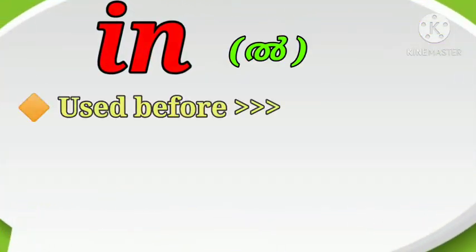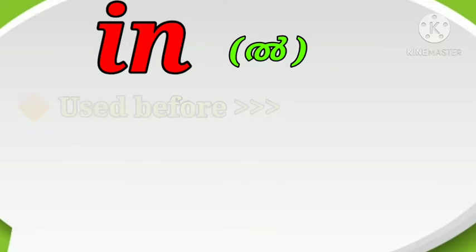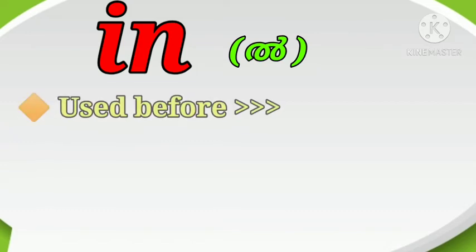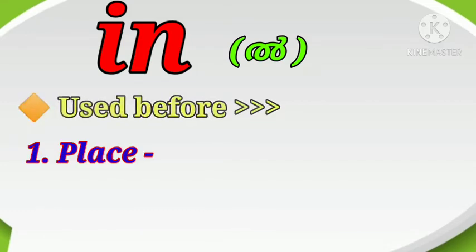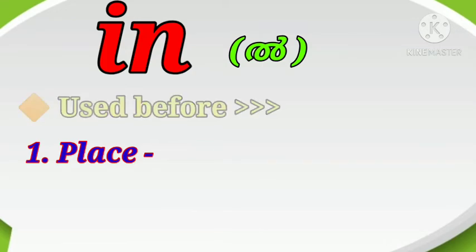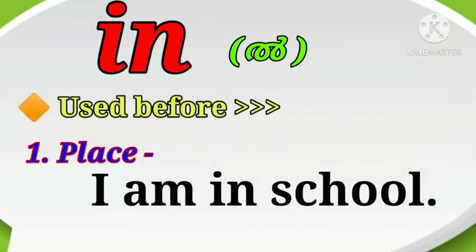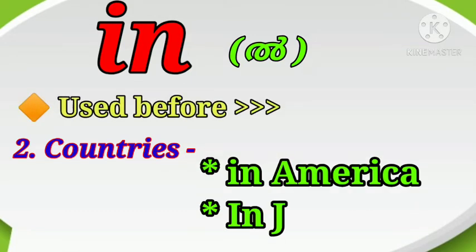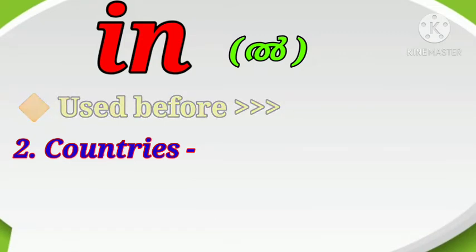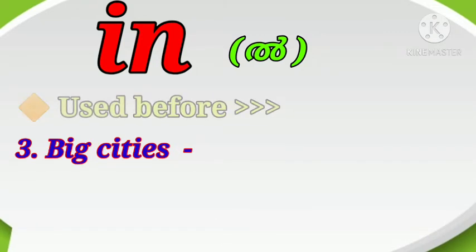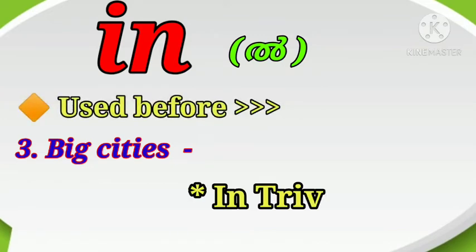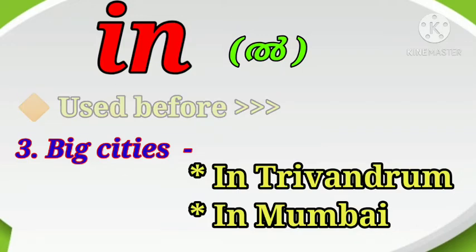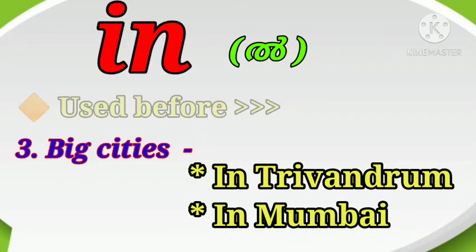The preposition 'in' is commonly used before any places, countries, big cities, months, years, and seasons. It is used before any places — for example, I am in school. It can be used before countries — for example, in America, in Japan. It can also be used before big cities — for example, in Trivandrum, in Kerala.